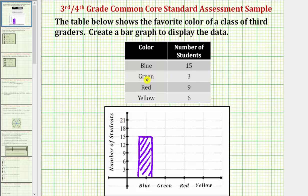Next, three students prefer green. So above green along the horizontal axis, we want to make a bar with a height of three units, which would look something like this.